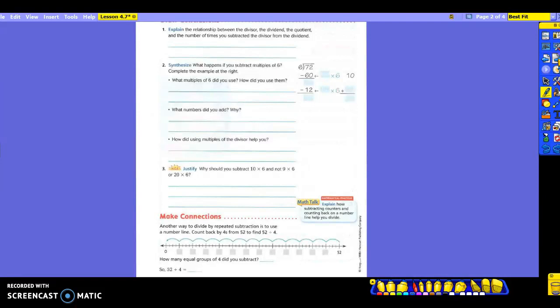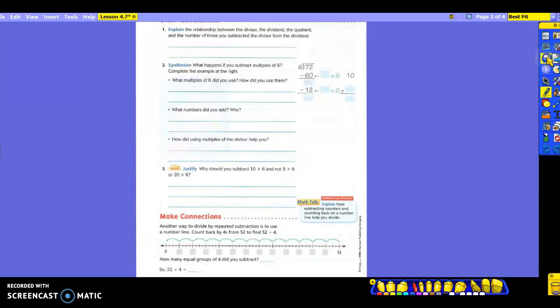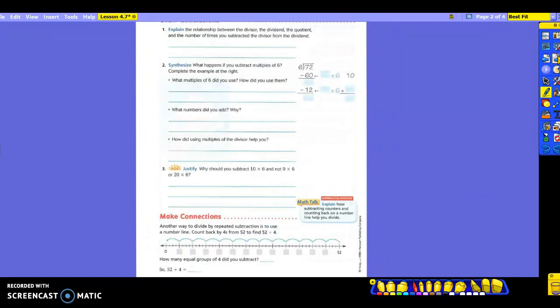Now, you have to know your vocabulary words: divisor, dividend, and quotient, to be able to answer these questions. Number one says to explain the relationship between the divisor, the dividend, the quotient, and the number of times that you subtracted the divisor from the dividend. So, let's go back and look at the numbers we're discussing. The divisor, dividend, quotient. What's 72? The dividend. Six is the divisor. And my quotient was? Twelve. That's also the number of times it took us to do subtraction, correct? So, we know what all our numbers are. So, it asks you about the relationship between those things. So, talk to your neighbor for a second about what you notice in all of those particular numbers.